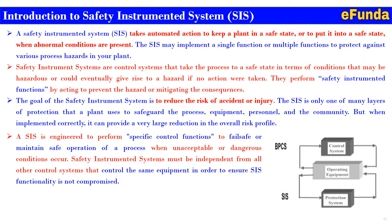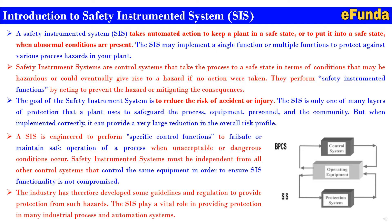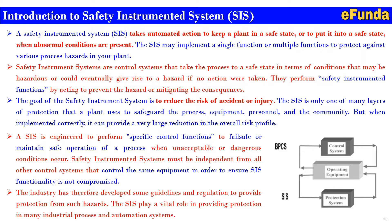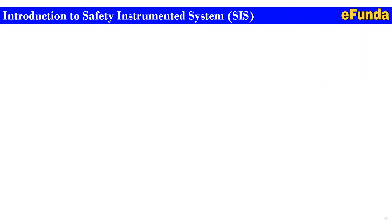As shown in the figure, the BPCS and SIS are shown as independent systems — the control system operating the equipment and the protective system work independently so as to have a controlled, safe, and incident-free output. The industry has developed guidelines and regulations to provide protection from such hazards, and the SIS plays a vital role in providing protection in many industrial processes and automated systems.